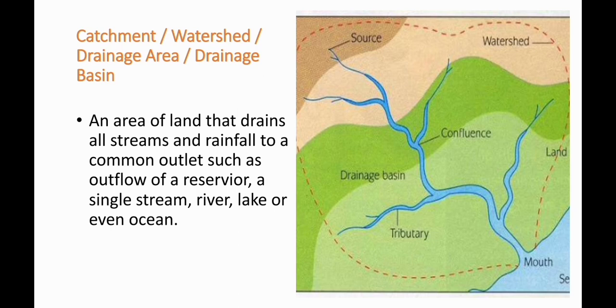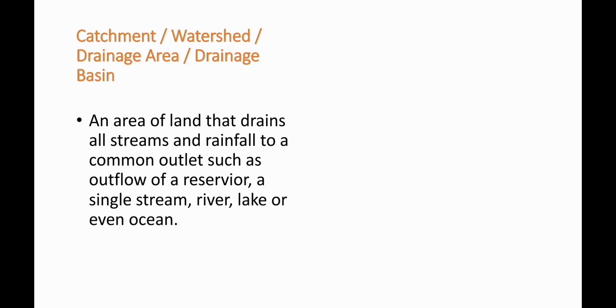Let's understand what is a catchment, watershed, or drainage area, to see how our hydrograph looks. A catchment is an area of land that drains all streams and rainfall to a common outlet such as a reservoir outflow, stream, river, lake, or ocean. It means a catchment is the area from which all water from streams and rainfall goes to a common outlet.